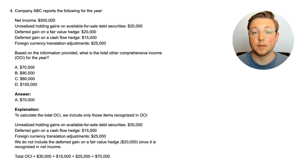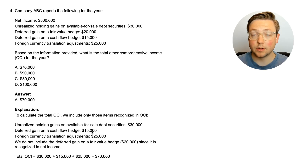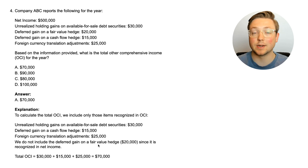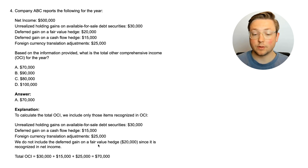The answer is $70,000. We only include items that belong in OCI. The unrealized holding gain on available-for-sale securities — $30,000 — is included. The deferred gain on a cash flow hedge — $15,000 — is also included in OCI. Foreign currency translation adjustments — $25,000 — we talked about that, that's included. We do not include the deferred gain on a fair value hedge ($20,000), since it is recognized in net income. So we learned: a cash flow hedge is included in OCI, whereas a fair value hedge is not. $30,000 + $15,000 + $25,000 = $70,000.